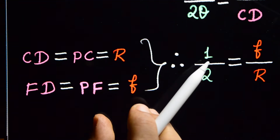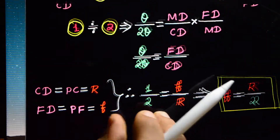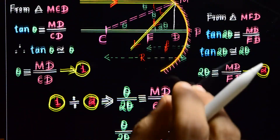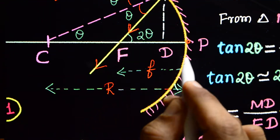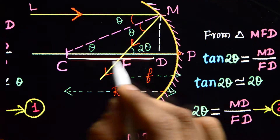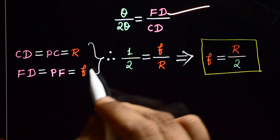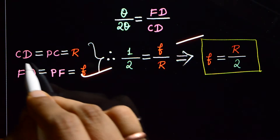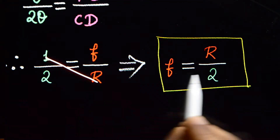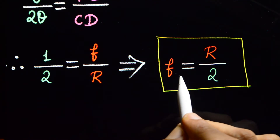Since D is very close to P, FD is nearly equal to PF, which equals f. And CD is nearly equal to CP, which equals R. Substituting these approximations: 1 divided by 2 equals F divided by R.